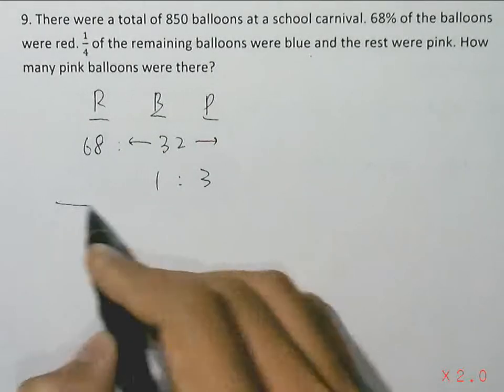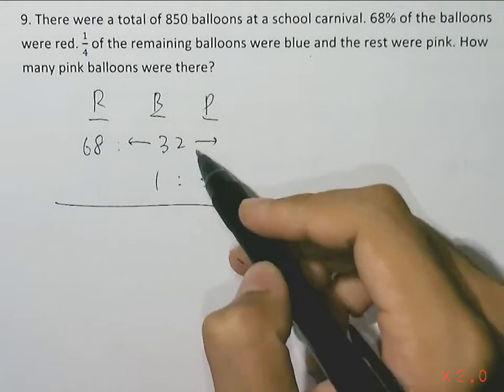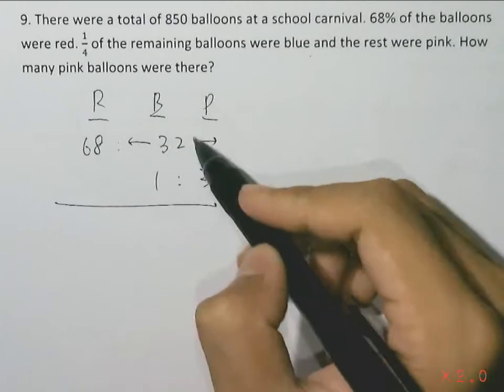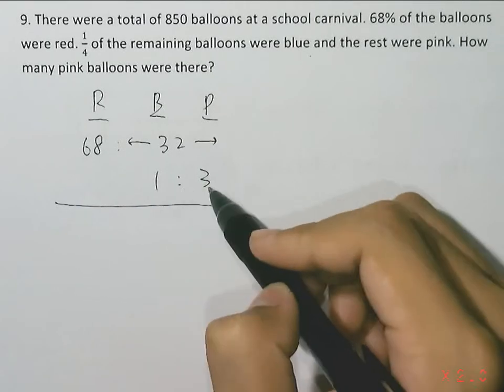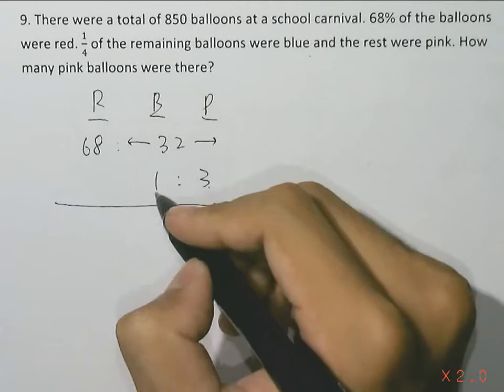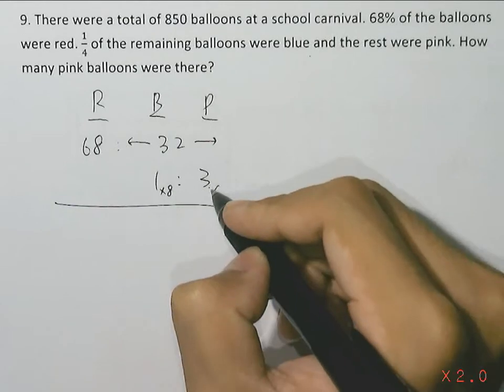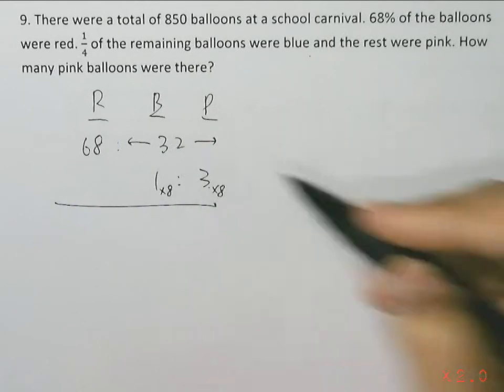So to combine these two ratios, we have to look at the overlapping part of blue and pink. This adds up to a total of 32, while this only adds up to 4. So we have to multiply the lower ratio by 8 throughout, because 4 times 8 gives us 32.